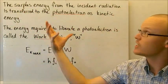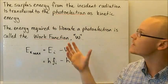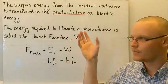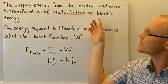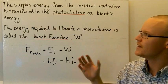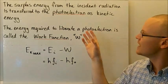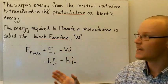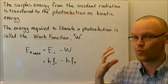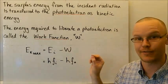The surplus energy — the energy left over from the incident radiation — is transferred to the photoelectron as kinetic energy. The energy required to liberate the photoelectron, to lift it out of that potential well, is called the work function, given the letter W — just like work, but in the context of the photoelectric effect it refers specifically to the work function.